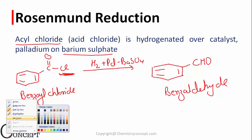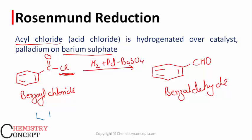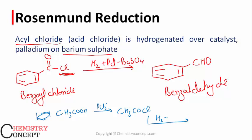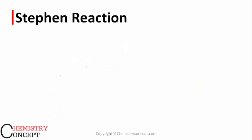This reaction can be used when we want to convert a carboxylic acid into an aldehyde. For example, CH3COOH (ethanoic acid) is reacted with PCl5 to form CH3COCl, and then reduced using hydrogen in the presence of palladium poisoned with BaSO4 to give CH3CHO.